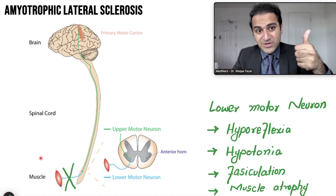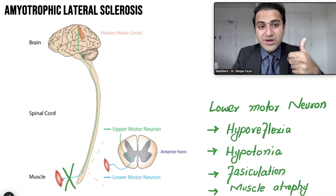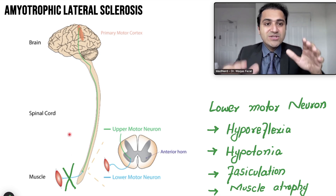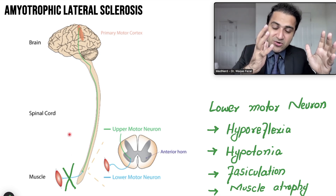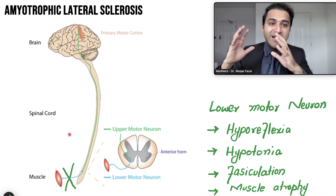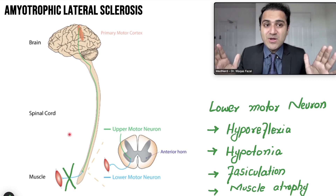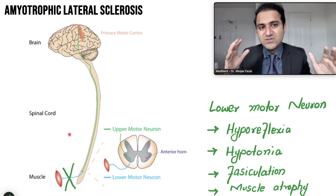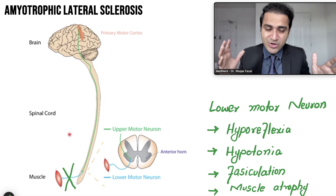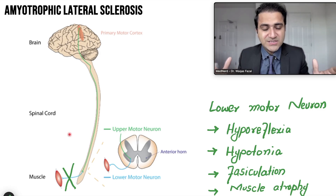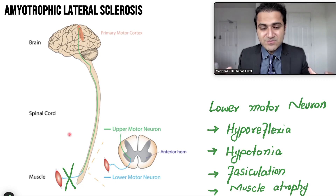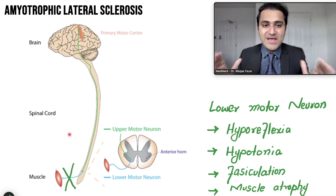The interesting feature in Amyotrophic Lateral Sclerosis is that you will find both upper motor neuron and lower motor neuron injuries in these patients — upper motor neuron signs in some parts of the body and lower motor neuron signs in other parts. This is what makes ALS different: most neurology diseases show either upper or lower motor neuron signs, but if you see both, think ALS.